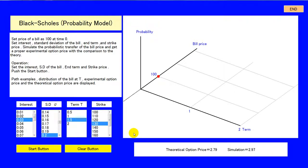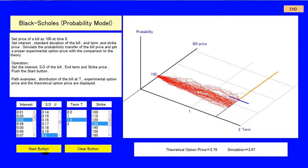The first is an approach with Probability Theory. Parameters: Interest 0.03, Sigma 0.2, Tone 1.5, Strike 130. Initial stock is 100. The price change is simulated.